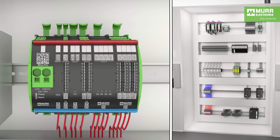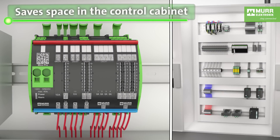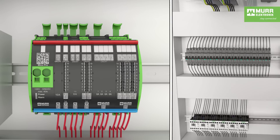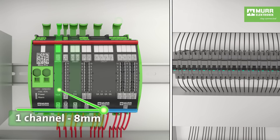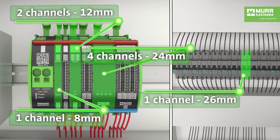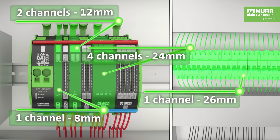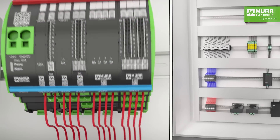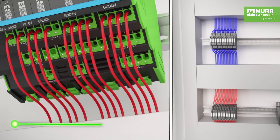Meeko Pro combines numerous functions, saving space in the control cabinet and reducing expenditure for project planning and wiring. The components have a slim design and require less space in the cabinet compared to regular circuit breakers. The integrated potential distribution allows even more space to be saved.